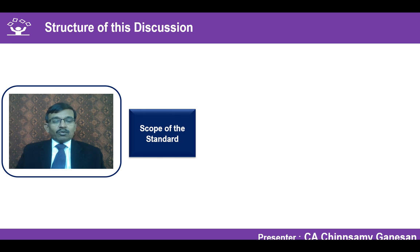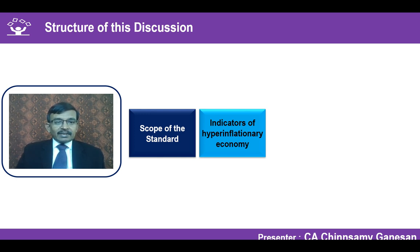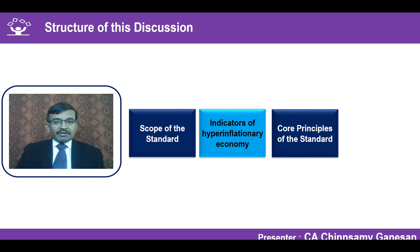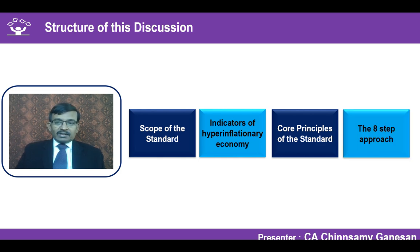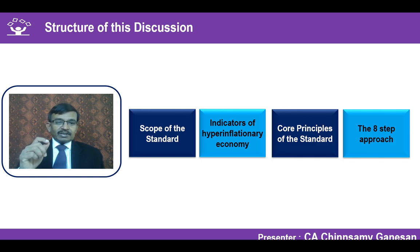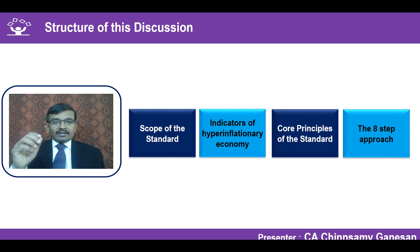We will understand the scope of the standard and when it has to be applied. We will look at all the indicators that a country is operating in a hyperinflationary economy, the core principles for recognizing assets, liabilities, income, and expenditure, and the entire prescription of the standard broken down into eight possible steps. If we understand those eight steps, understanding Ind AS 29 becomes simple.